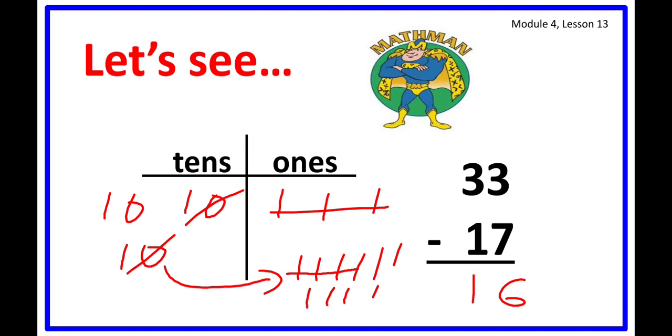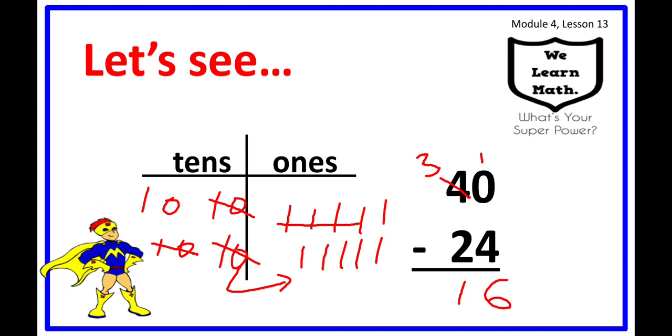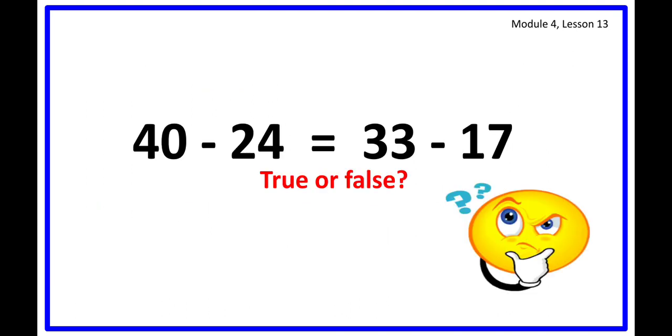So let's come back now to tell if it is true or false. So 40 minus 24 is equal to 33 minus 17, true or false? This is true because what we did just now: 40 minus 24 is 16.